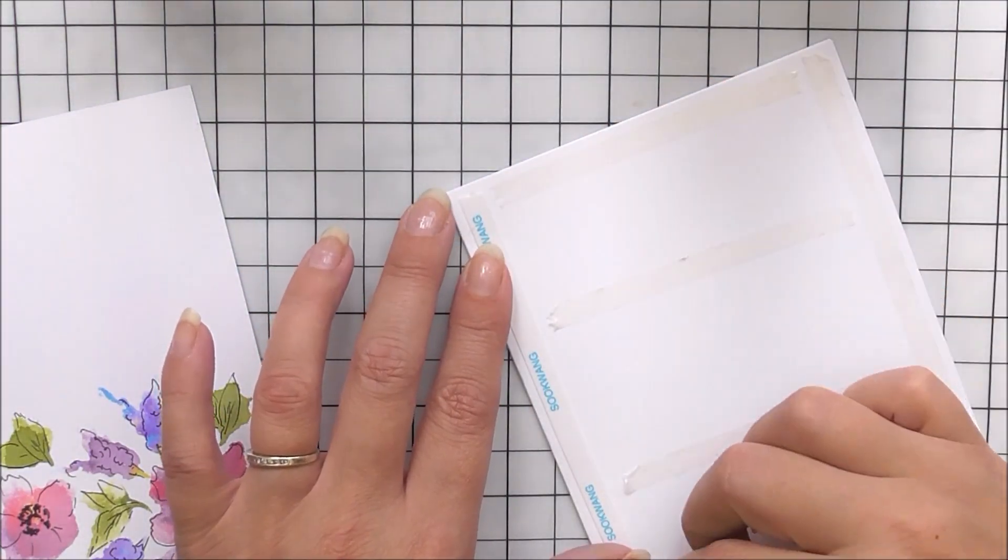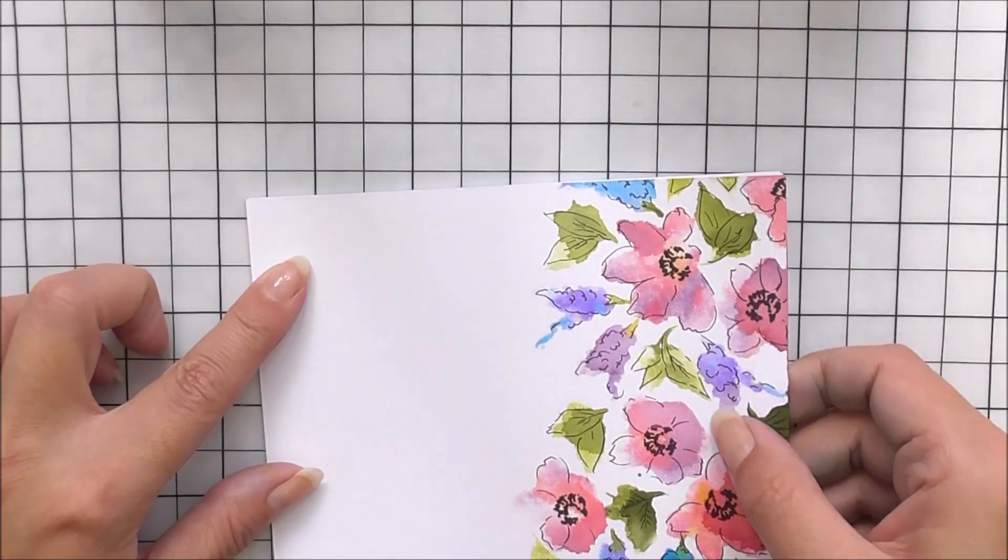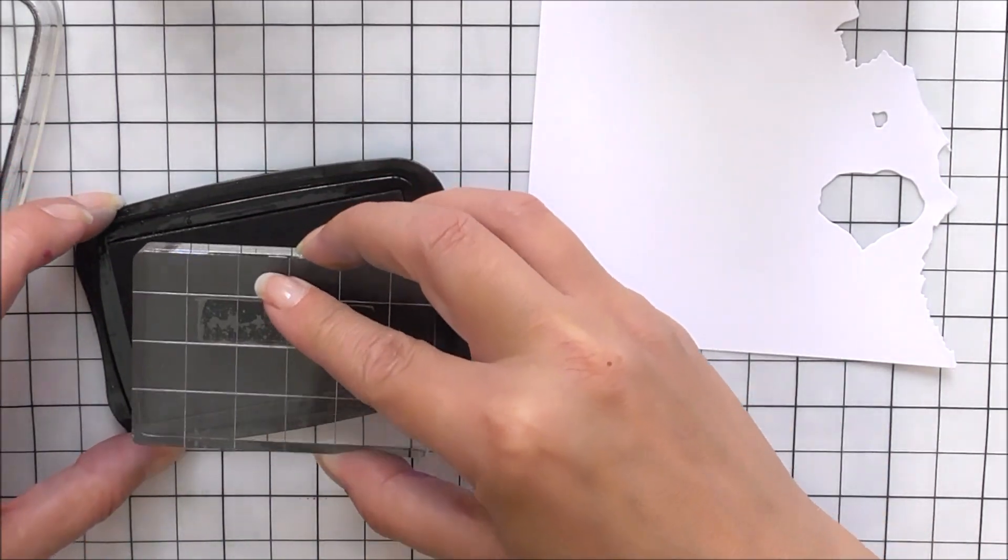Once I finish my doodling, I'm going to add my panel onto a piece of my card base, and I'm just using some tape because I've used watercolor cardstock so it has buckled a little bit.